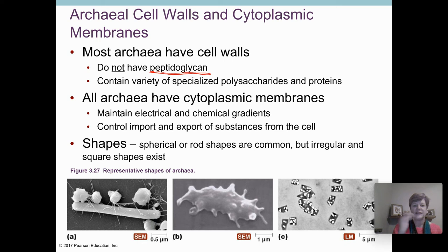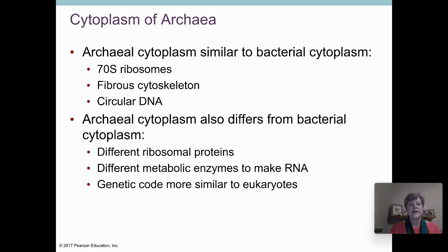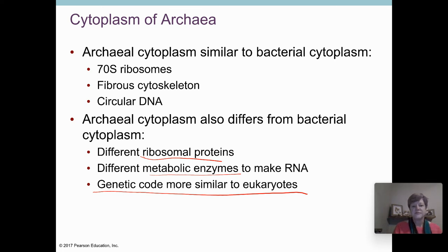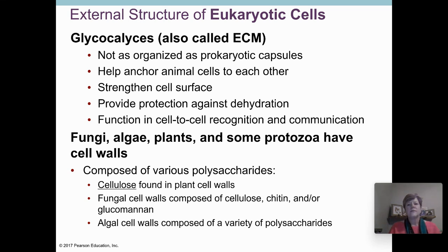Archaeans do have rod shapes and spherical ones, but they also have very odd shapes — lots of irregular and unusual forms, more so than in bacteria. The cytoplasm of archaeans is fairly similar to bacteria, but there are some differences: the ribosomes are slightly different in structure, they have slightly different enzymes, and the genetic code of archaeans is more similar to eukaryotes.